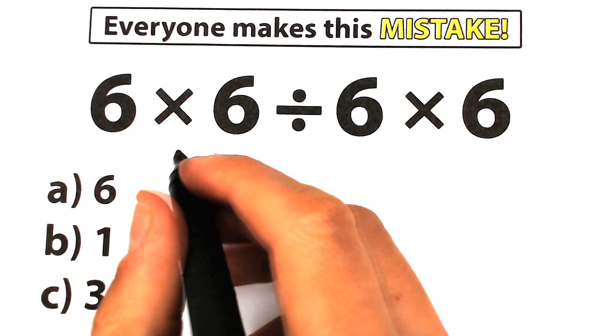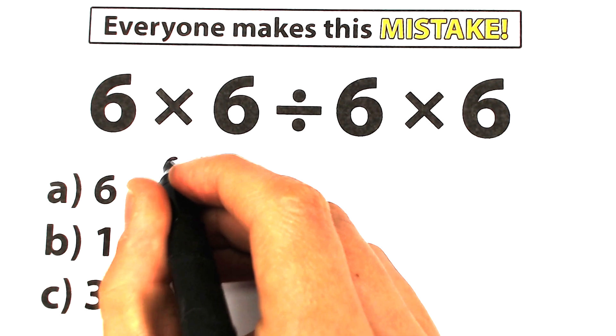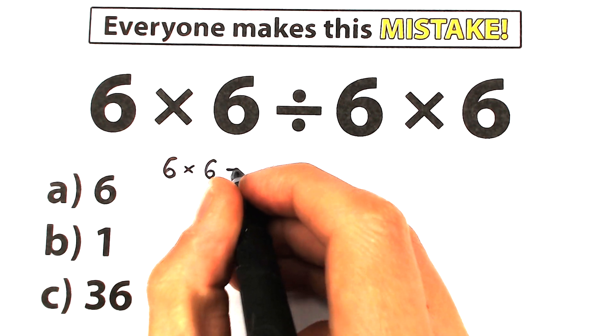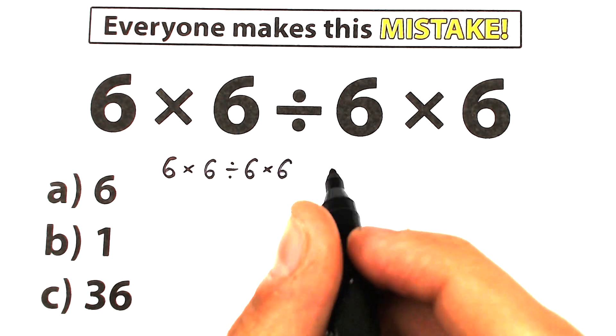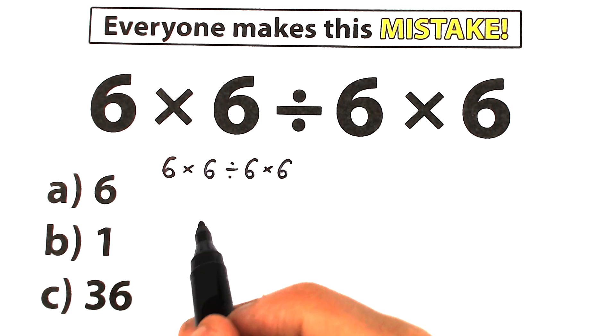First of all, here is our challenge, and let's rewrite this challenge right here. So we have 6 times 6 divided by 6 times 6. So this is the most common mistake right here, and right now I'm going to show you the most common mistake.